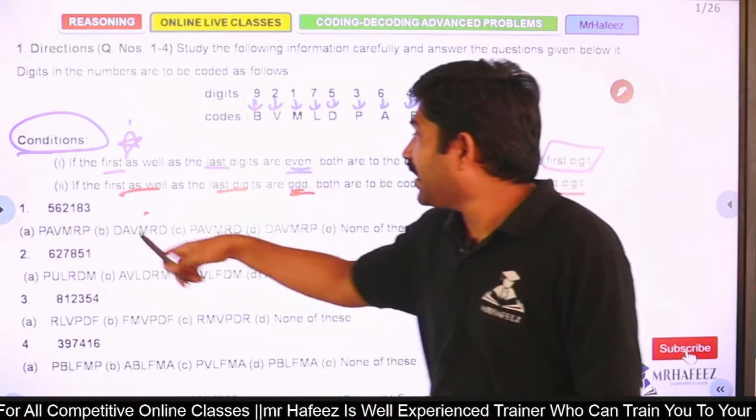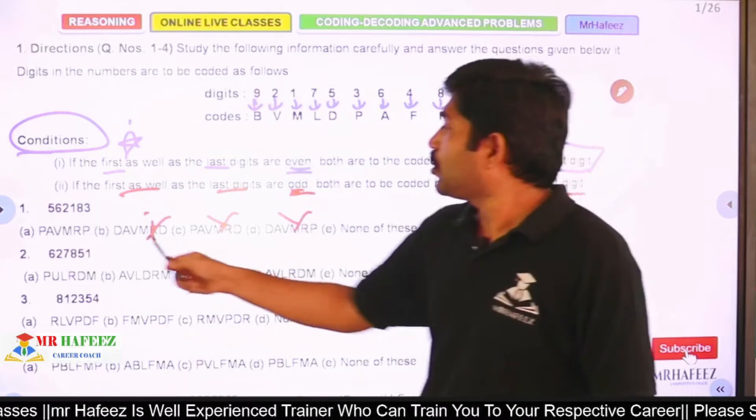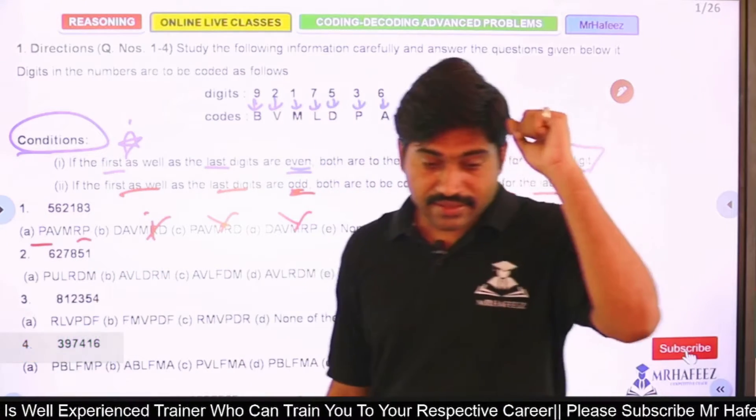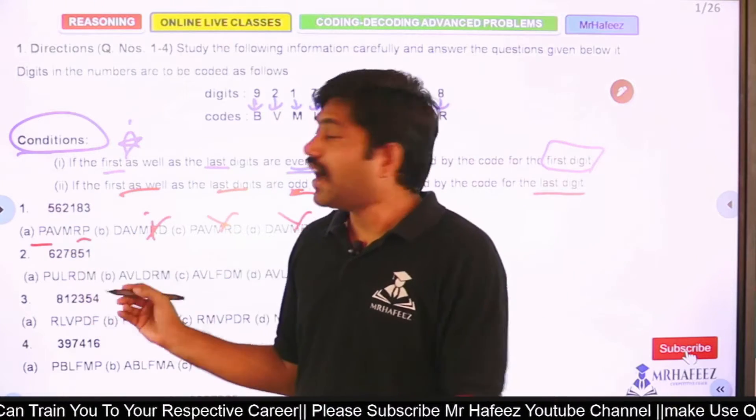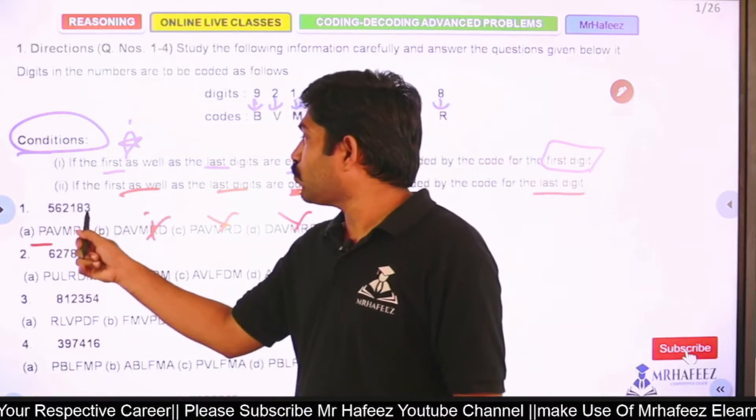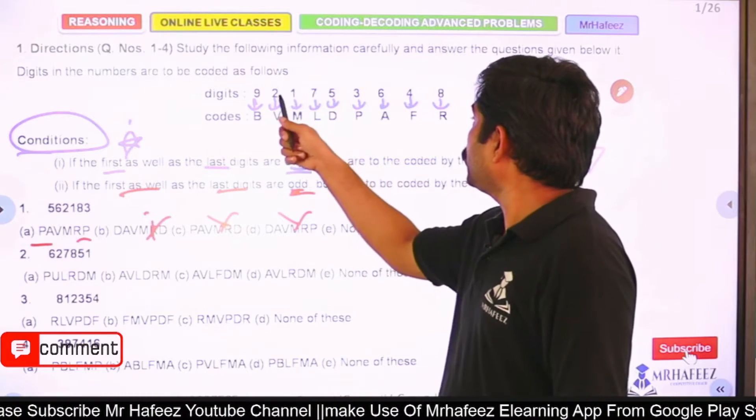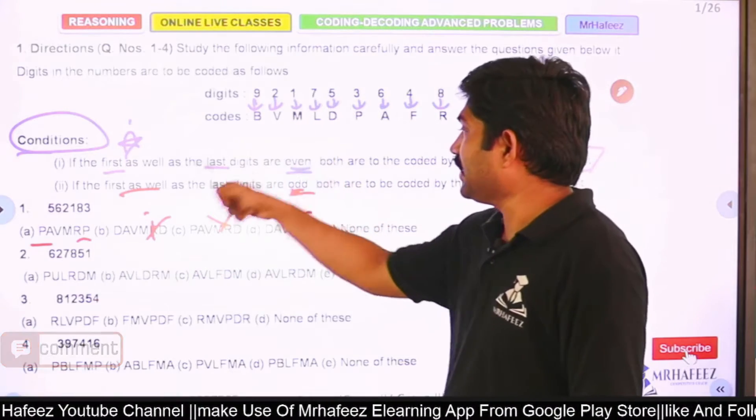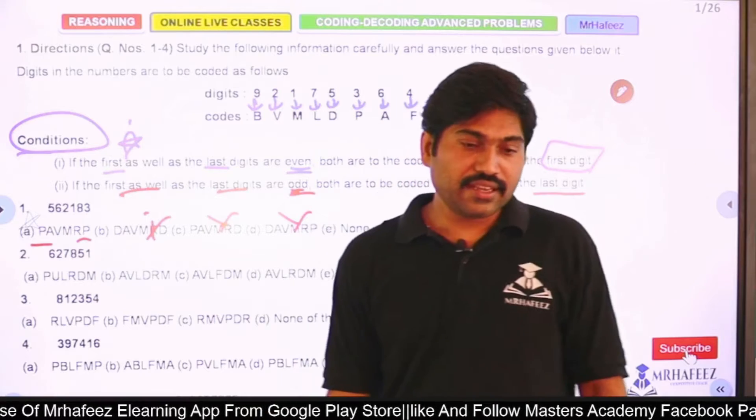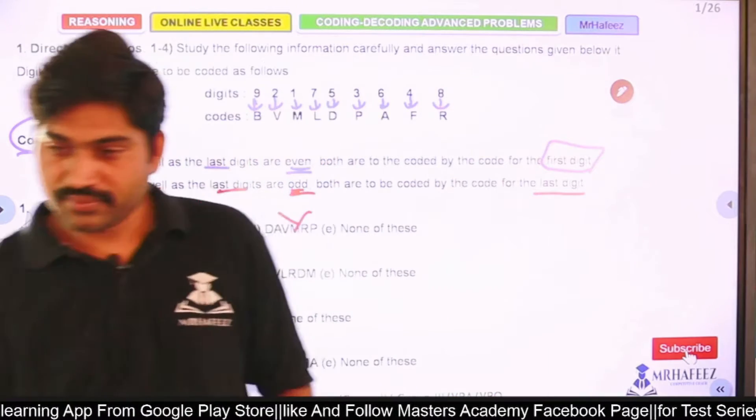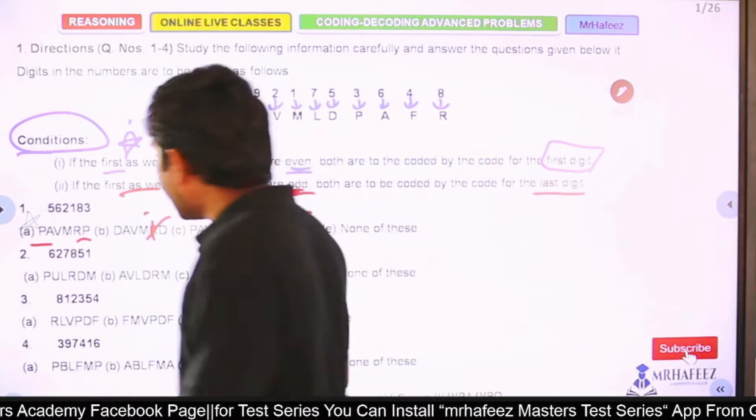First and last are P, so I should write P code for both first and last. The remaining codes follow normally. 6218: 6 is A, 2 is V, 1 is M, 8 is R. Yes, absolutely, A is the right answer. If that is clear, type CLR in the comment box. Excellent. Now the second question.